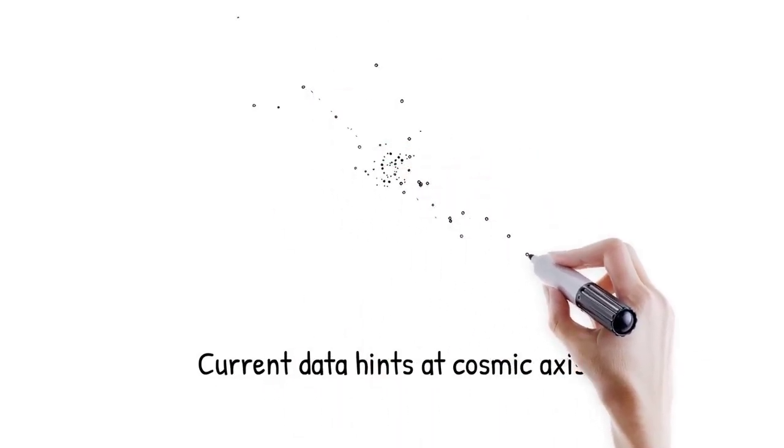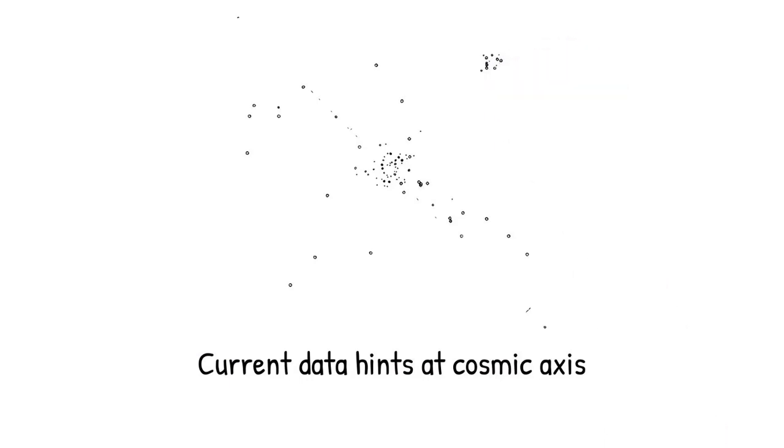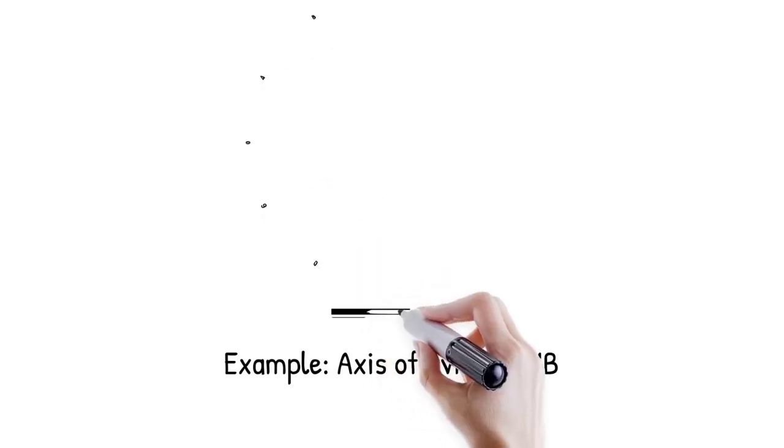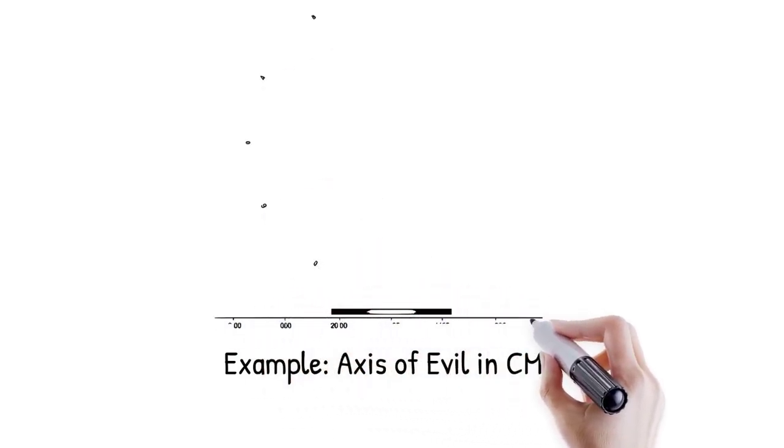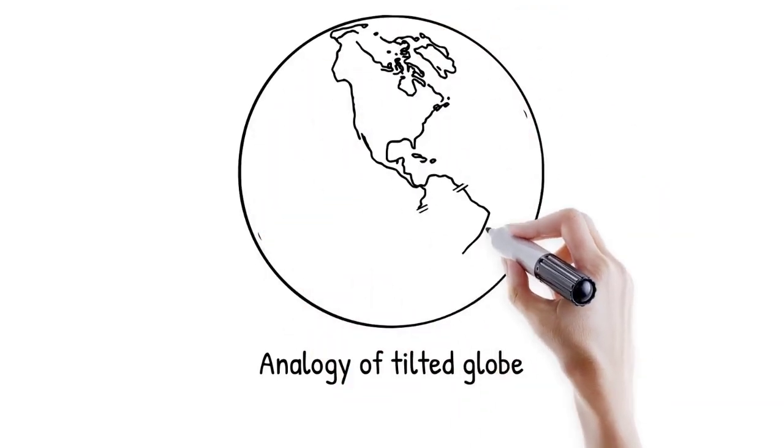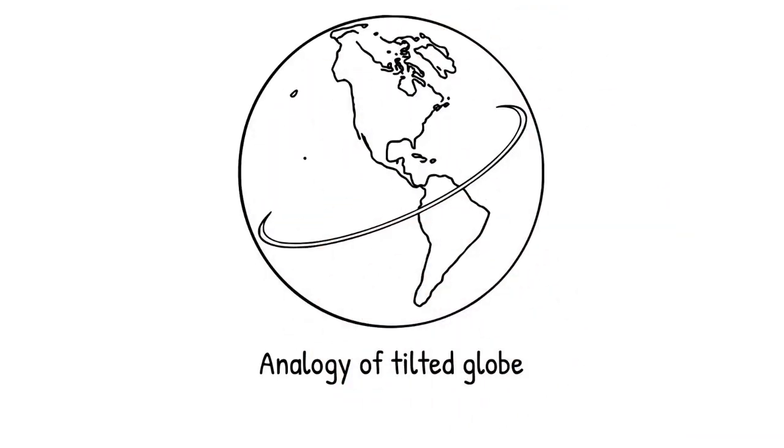Current data from quasar alignments, CMB anomalies, and large-scale flows show hints but not proof of such features. The so-called axis of evil in the CMB temperature map suggests a low multipole alignment, possibly echoing the quasar alignment effect. It's like discovering that your globe has a subtle tilt, not caused by Earth's spin, but baked into the shape of space itself.